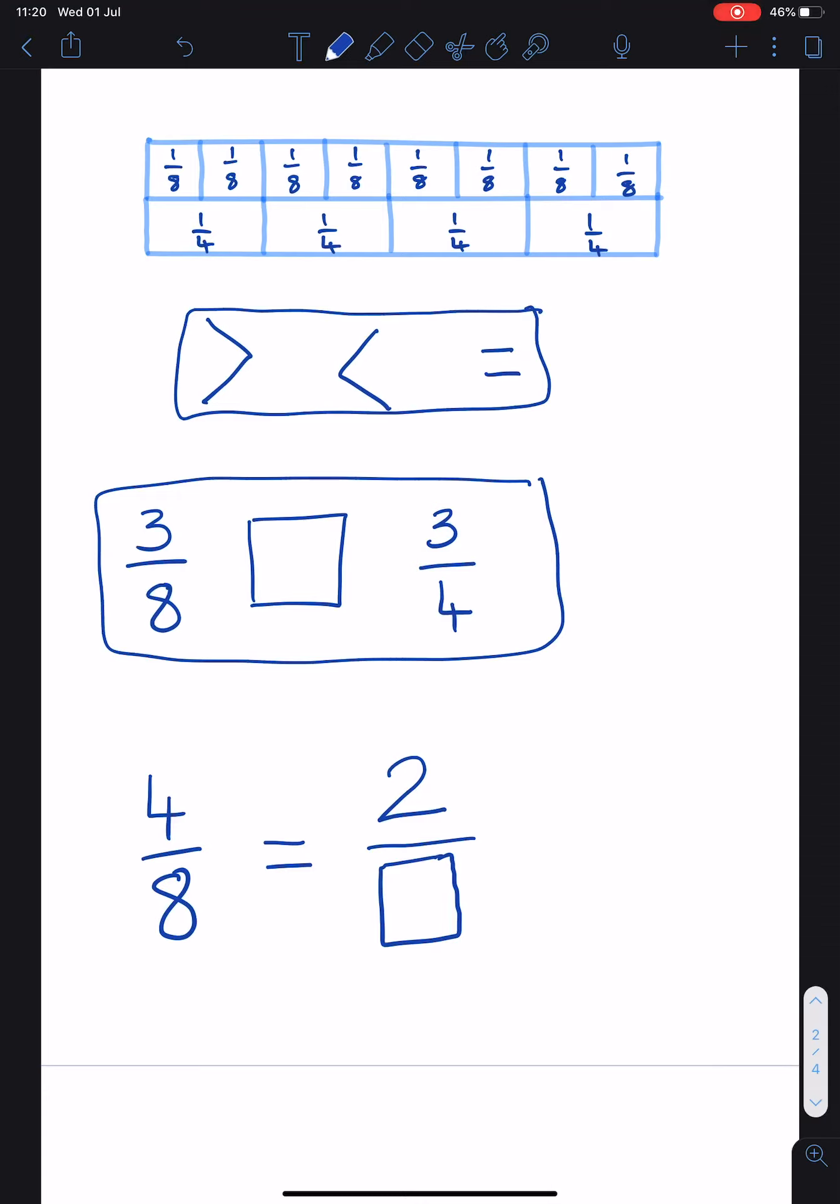Three eighths. One, two, three. Three quarters. One, two, three. You can see straight away that three quarters is bigger than three eighths. So your crocodile will face the three quarters.